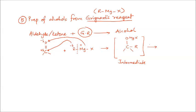In the next step, we perform acid hydrolysis. When we do the acid hydrolysis, the carbon already has one R group attached, and O-MgX becomes O-H, giving us the alcohol product.